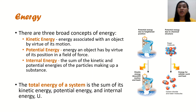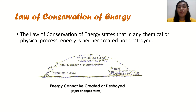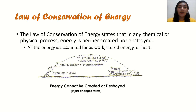The total energy of a system is the sum of its kinetic, potential, and internal energy. We also observe the law of conservation of energy, which states that in any chemical or physical process, energy is neither created nor destroyed. In chemistry, we could not create new energy and we could not destroy a previous energy. All the energy is accounted for as work, stored energy, or in chemistry, we would observe this as heat.